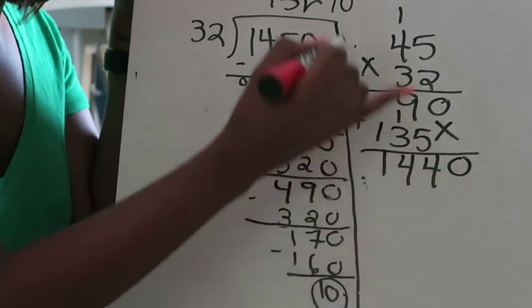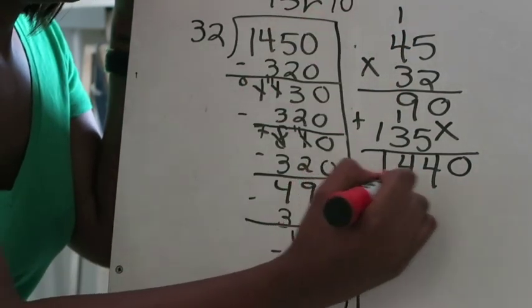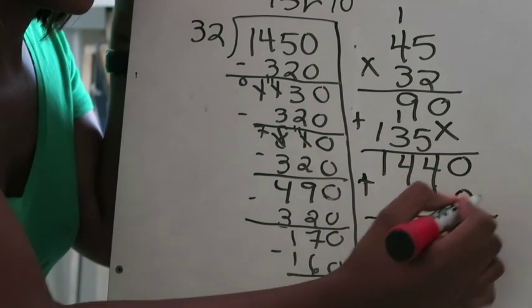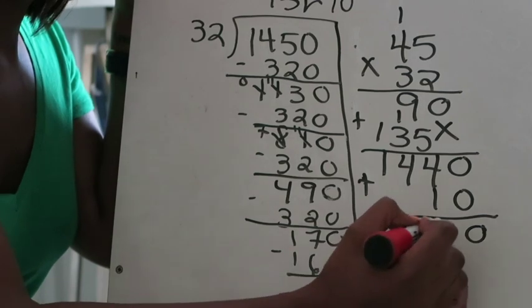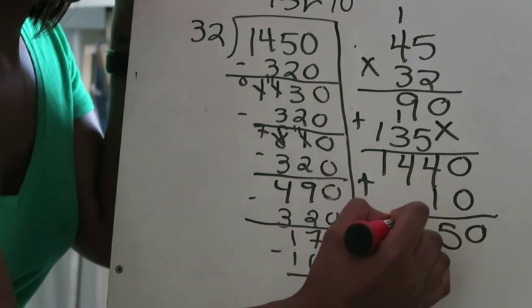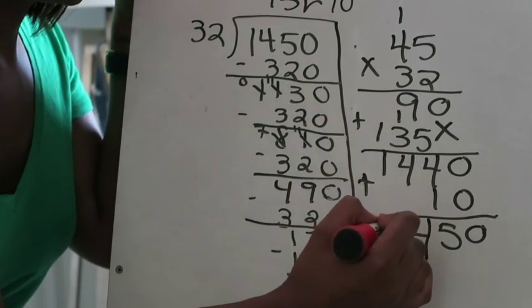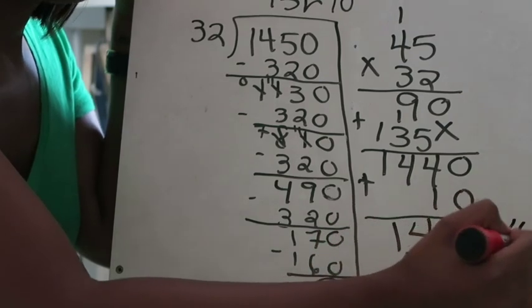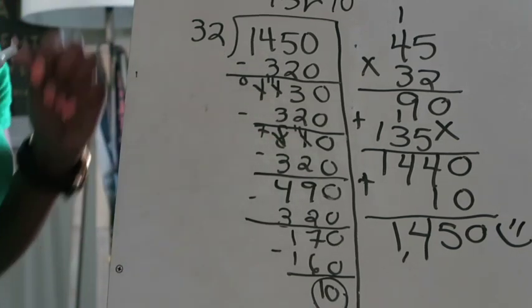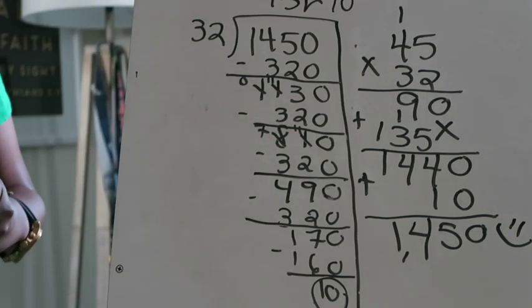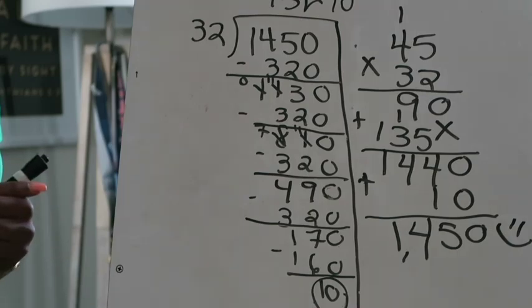It doesn't match but don't panic because you got to add in your remainder. There's the 10 which was the remainder. 0 plus 0 is 0, 4 plus 1 is 5, 4 plus nothing is 4, 1 plus nothing is 1. Smiley face because my check answer matches the dividend. So I'm going to wrap it up and we're going to have some closing thoughts. I'll see you in just a second.